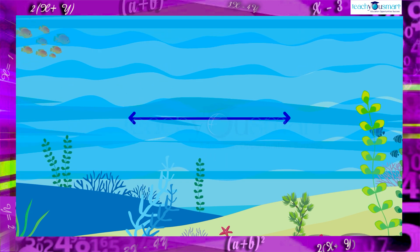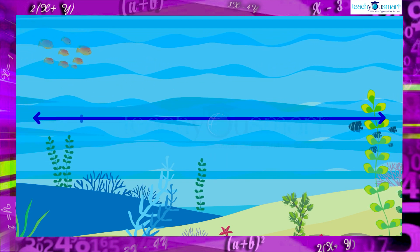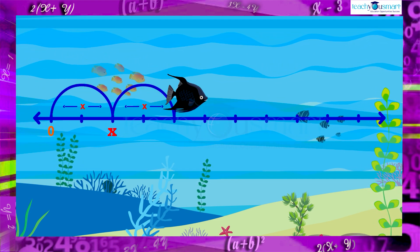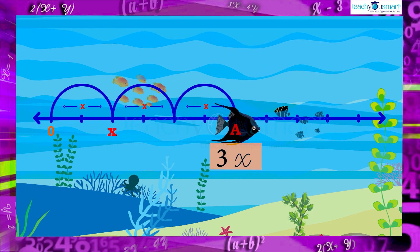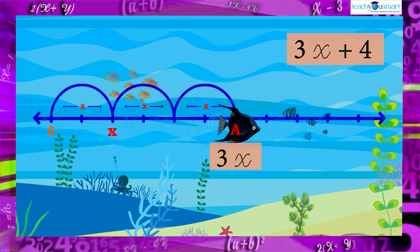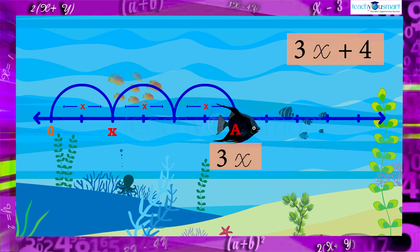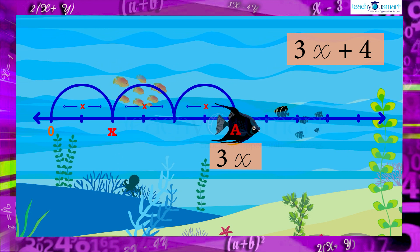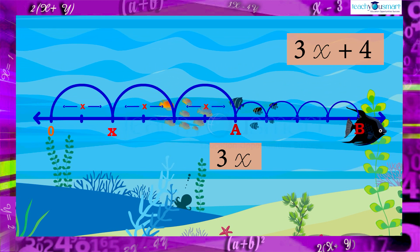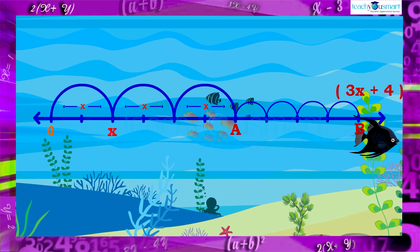Now consider 3x plus four. For that first mark 3x. Then what will be the position of 3x plus four? It is four units right of the position of 3x. That is four units right of a. Mark it as b. This distance is 3x plus four.